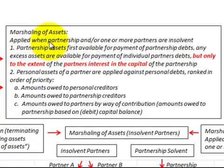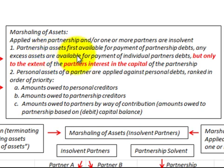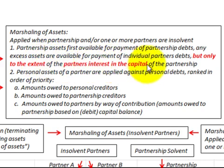The marshalling of assets doctrine is applied when the partnership and/or one of the partners is insolvent. First, partnership assets are available for payment of partnership debts. Any excess assets are available for payment of individual partners' debts, but only to the extent of the partner's interest in the capital of the partnership.